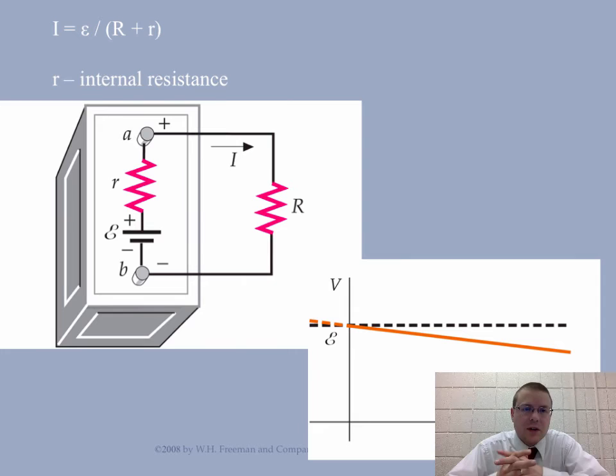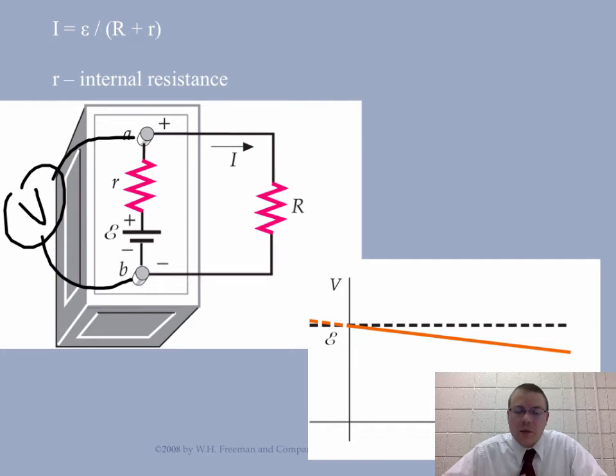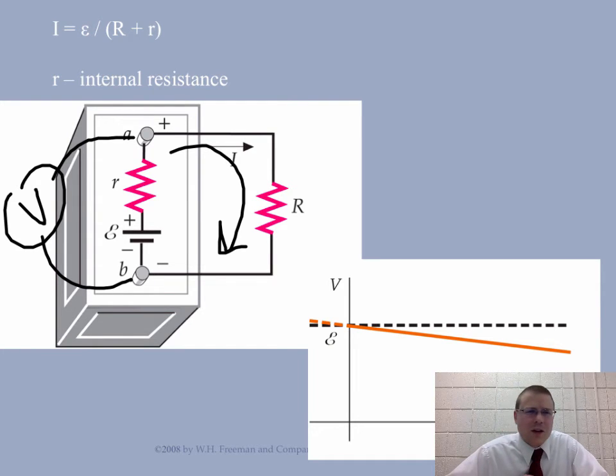So the last topic we want to talk about here is this idea of what we call internal resistance. When you go and try to measure the voltage of a battery, we've taken voltmeters many times before, and with our voltmeters we've touched the positive terminal and we've touched the negative terminal and see what the reading is. That'll be the real terminal voltage of the battery, meaning the potential from the low end to the high end. But if you start connecting that battery to a resistor, what you may find is that as soon as current starts to flow around the circuit, the terminal voltage will drop.